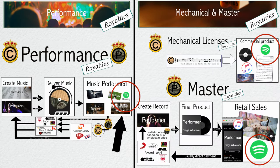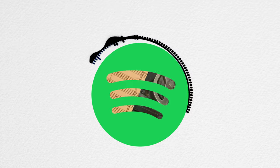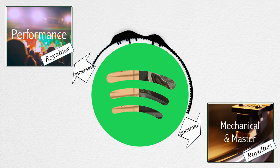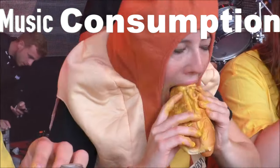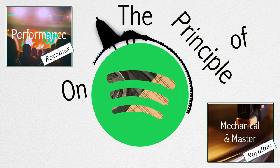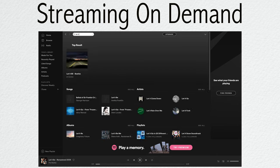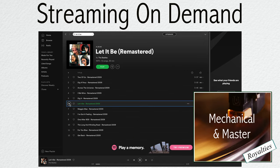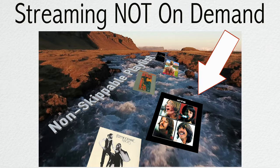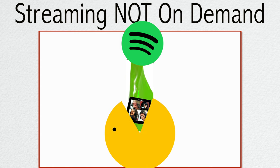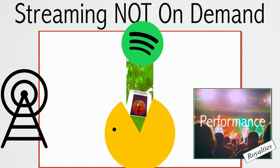Streaming is the only hybrid use of music that can generate both performance or mechanical and master income, based on the type of consumption. It comes down to the principle of on-demand use. If I decide to listen to and download "Let It Be" on Spotify, that will generate mechanical and master royalties. However, if I listen to "Let It Be" on Spotify because it's part of a non-skippable playlist that the streaming service is playing like radio would, then that would generate performance income and royalties.